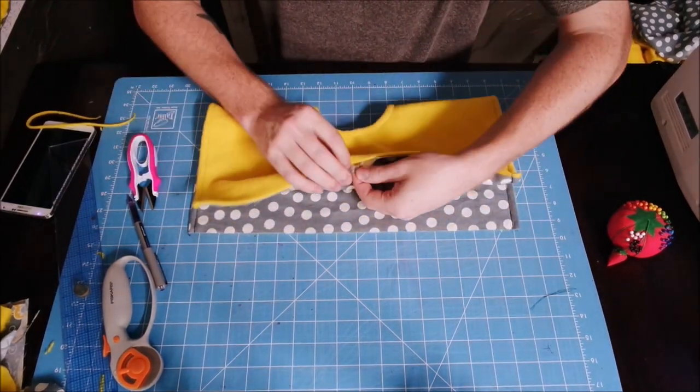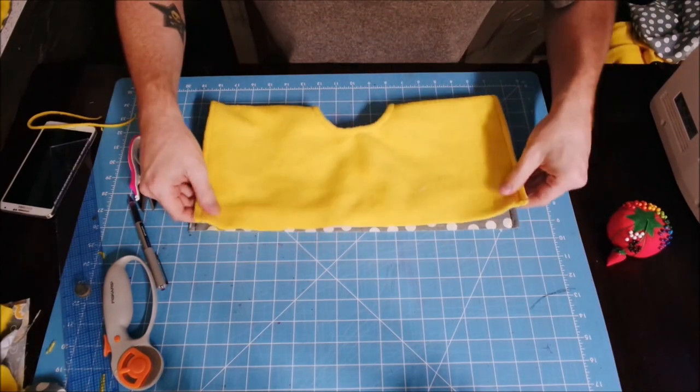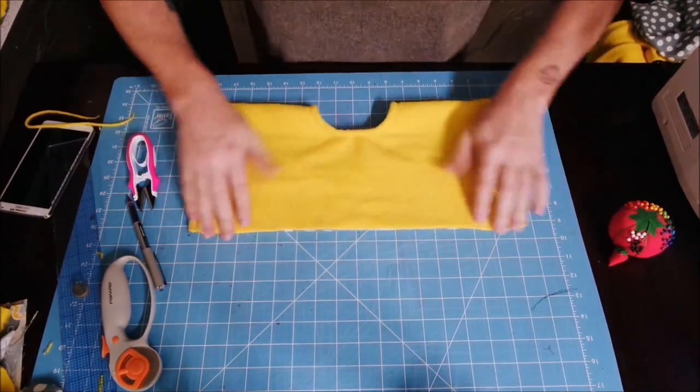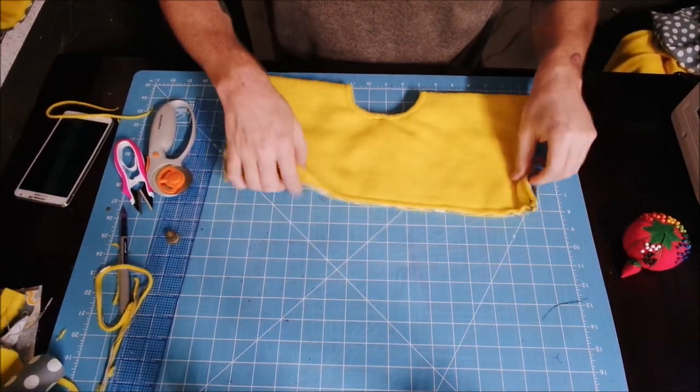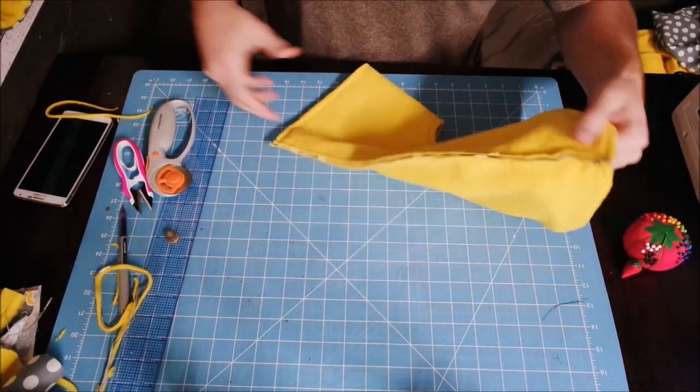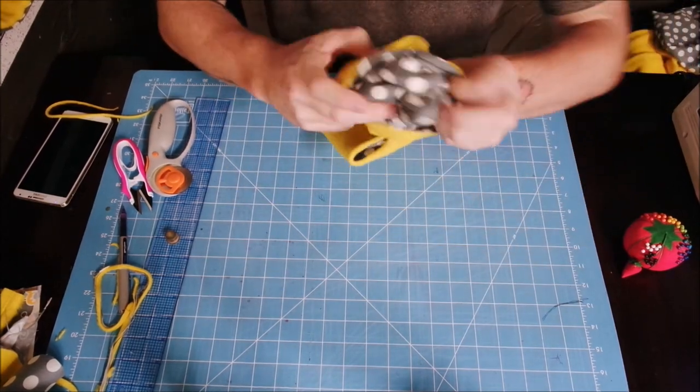Now these are the sides that we didn't sew, these are the open sides, and now you're going to pin those together and sew those. All right, so I sewed along there and now it should be all sealed up, and now we're just going to flip it inside out.